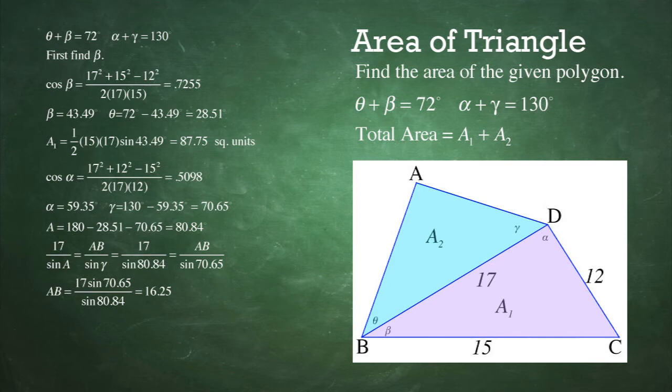Now we can use the law of sines to find the length of the side AB. So 17 over sine of angle A is equal to AB over the sine of angle gamma. Or 17 over the sine of 88.84 equals AB over the sine of 78.61. So AB equals 16.25.